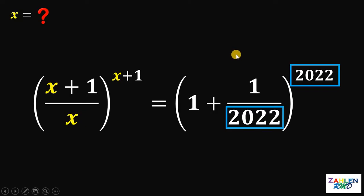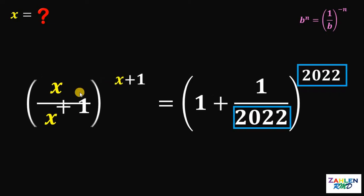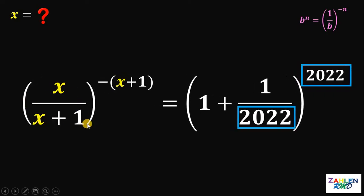Take note of this law of exponents: if we have b raised to n, it is equivalent to the reciprocal of the base, 1 over b, raised to the negative of the exponent, which is negative n. On the left-hand side of our equation, we can say that x plus 1 over x, raised to x plus 1, is equivalent to x over x plus 1, raised to negative of x plus 1.